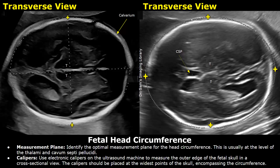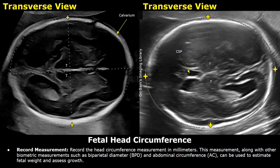Place the calipers on the outer edge of the fetal skull in a cross-sectional transverse view in this manner. This is the method for measuring fetal head circumference. The fetal head circumference is measured in millimeters.